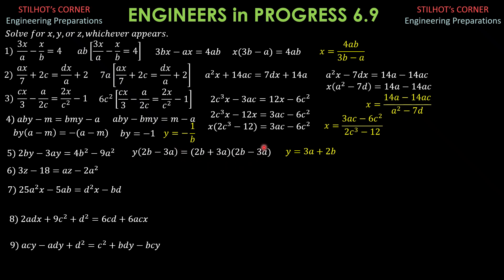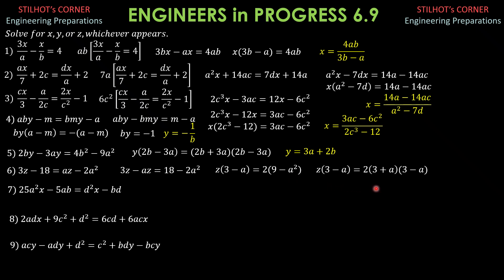This becomes 3Z minus AZ equals 18 minus 2A². Factor out Z: Z times (3 minus A) equals 2 times the quantity (9 minus A²). Since (9 minus A²) is a difference of two squares, we get Z times (3 minus A) equals 2 times (3 plus A) times (3 minus A). Cancel out (3 minus A). Therefore, Z equals 2 times (3 plus A), which gives Z equals 2A plus 6.